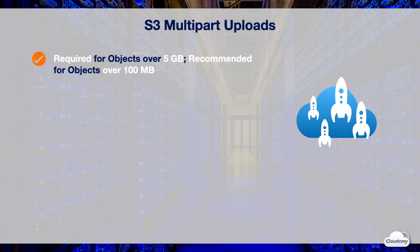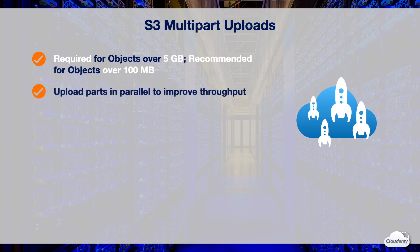5GB is the maximum S3 object size allowed to be uploaded in a single operation. You must use multipart upload when your objects are over 5GB. If you upload an object that is over 100MB, it's recommended to use multipart uploads instead of uploading in a single operation. Multipart uploads can help optimize performance for uploading large objects, allowing you to upload a single object as a set of parts in parallel to increase aggregate throughput.